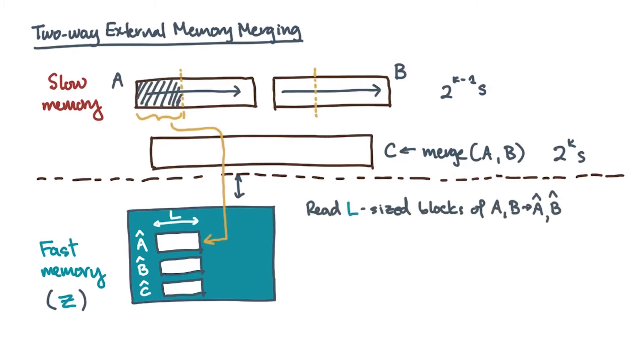To perform the merge, start by reading one L-sized block from each of A and B in slow memory, and move them to fast memory. Then carry out the following steps.